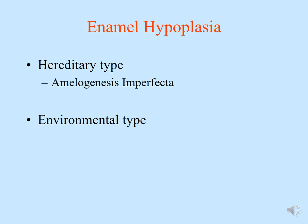Moving on, enamel hypoplasia means abnormal formation of enamel. There are two types: a hereditary type and an environmental type. Under the hereditary type, we have amelogenesis imperfecta, which I will explain shortly. Under the environmental type, there are many different causes that can result in hypoplastic enamel.